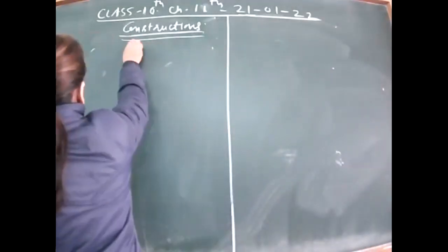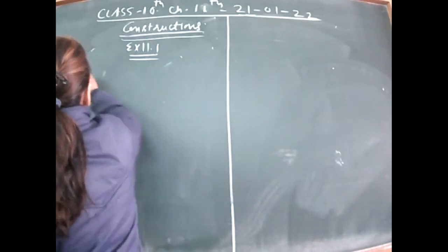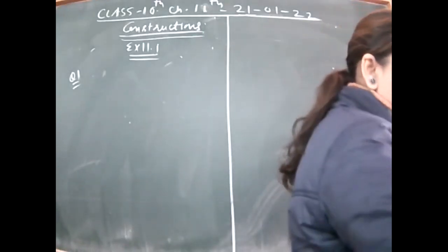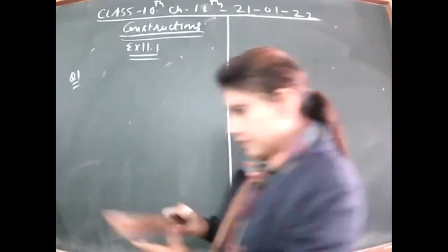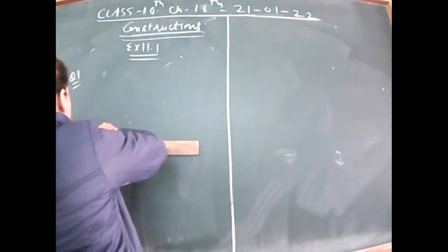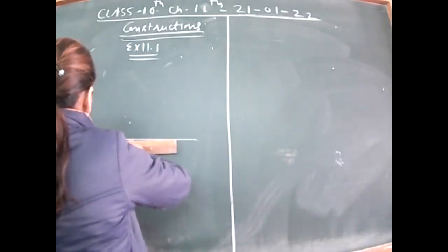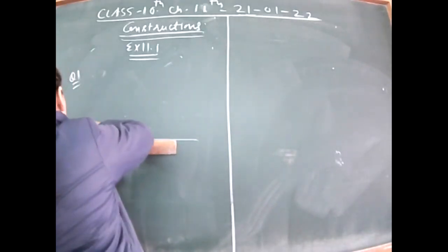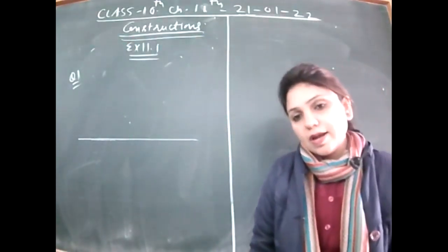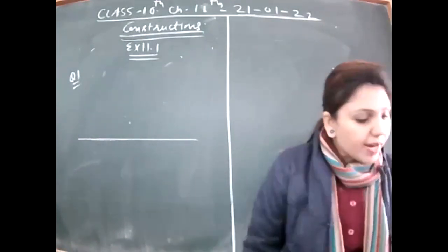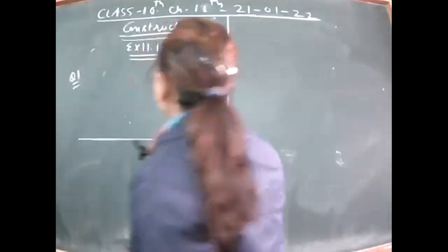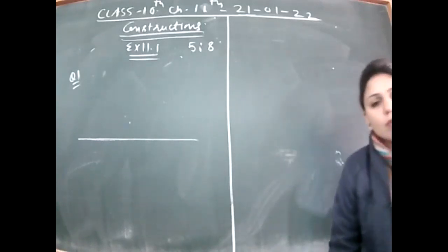Starting with Exercise 11.1, Question 1. Draw a line segment of length 7.6 cm and divide it in the ratio 5:8.